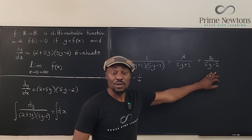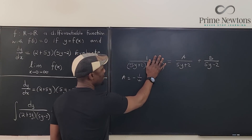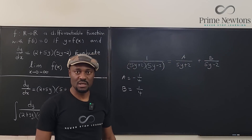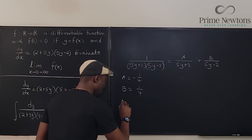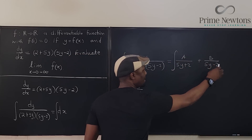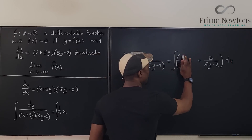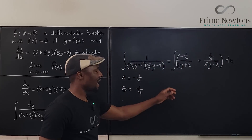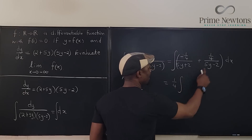Now we do the same thing for B. We plug in 2 over 5 using the cover-up method, and we get B equals 1 over 4. So these are the two values: A = −1/4 and B = 1/4. This means we can write the integral on the left-hand side as the integral of A/(5y + 2) plus B/(5y − 2) dy, which becomes (1/4) times the integral of 1/(5y − 2) minus 1/(5y + 2) dx.